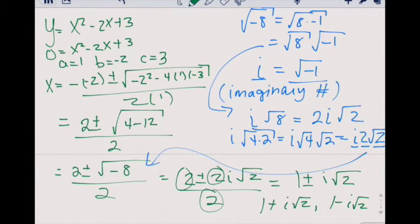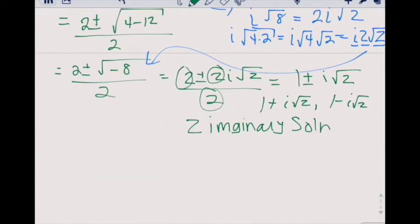So to show the two solutions: we've got 1 plus i square root 2 and 1 minus i square root 2. This gives us two imaginary solutions. The graph never crosses the x axis.